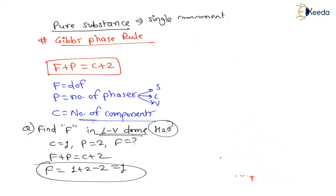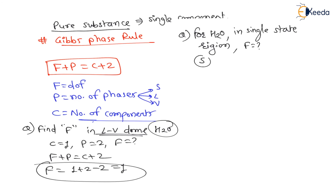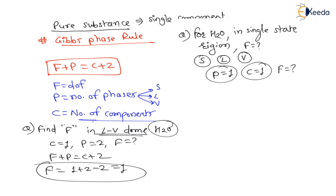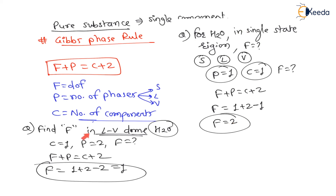Question 3: Find the degree of freedom in the single-state region for water. In the single-state region, the substance exists in only one phase — it may be solid only, liquid only, or vapor only — so the number of phases P = 1. Since water is a pure substance, C = 1. Applying Gibbs phase rule: F = C + 2 − P = 1 + 2 − 1 = 2. Therefore, in the single-state region, the degree of freedom for water is 2. To summarize: single-state region F = 2, two-state region F = 1, and at the triple point F = 0.